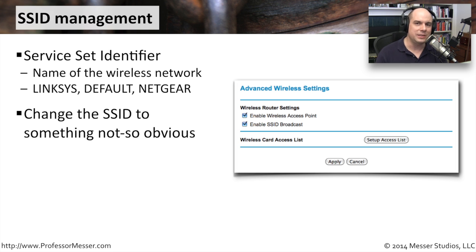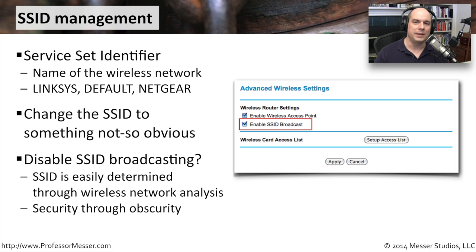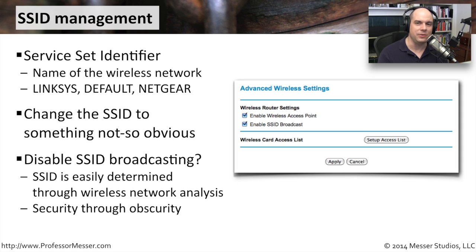You can also disable the broadcasting completely. This is a configuration setting from my access point — here's a checkbox to enable SSID broadcast or not; I can turn it on or off. But even so, it's very easy with protocol analyzers to sniff the air and see what access points are out there. As soon as somebody connects, I'm going to see the SSID.